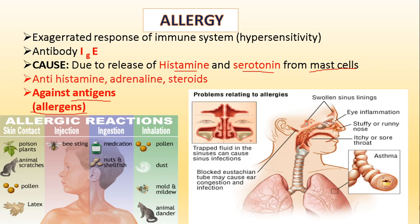To treat allergic reactions, antihistamines or adrenaline steroids can be given. Antihistamines counter the effect of histamine, gradually reducing the symptoms. The antibody associated with allergic reactions is IgE — released whenever an allergen enters the body, with B lymphocytes producing IgE type antibodies. This covers the immune system discussion, related to both the innate and acquired immune systems.